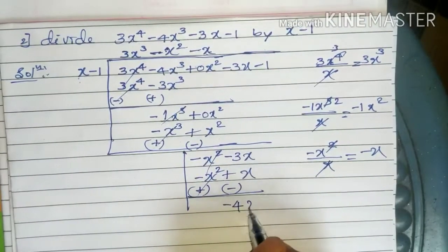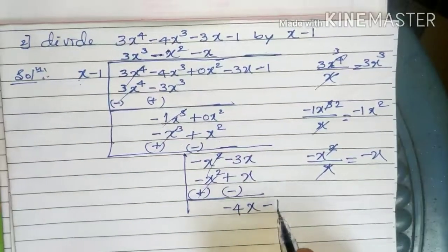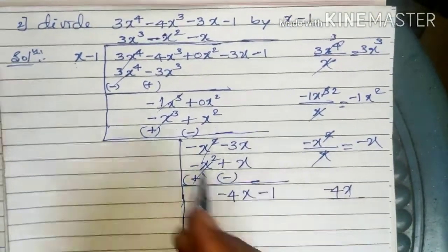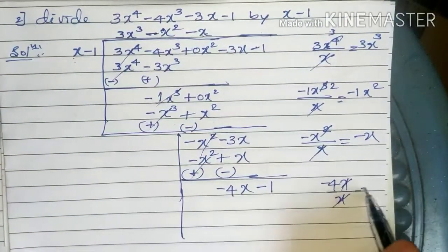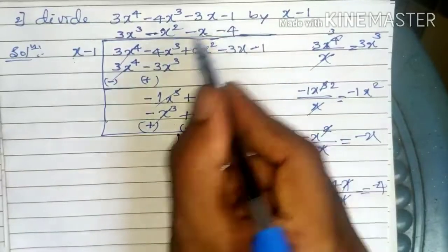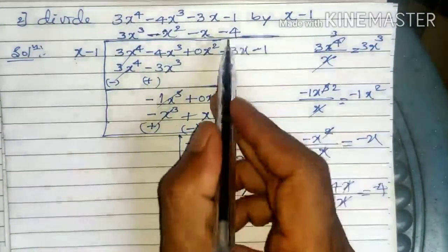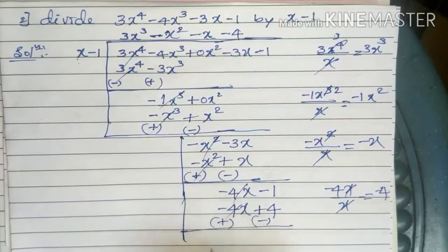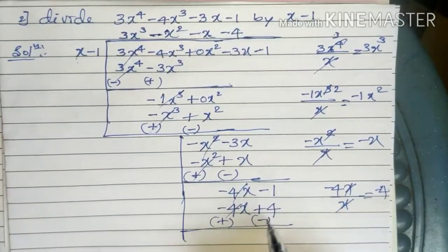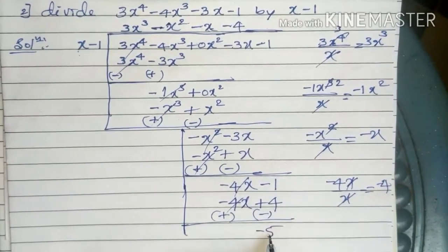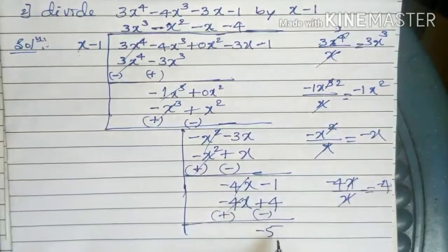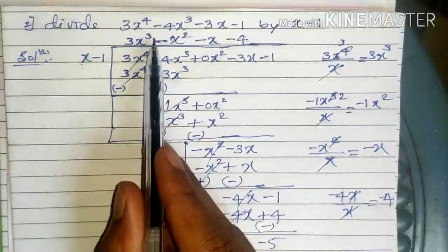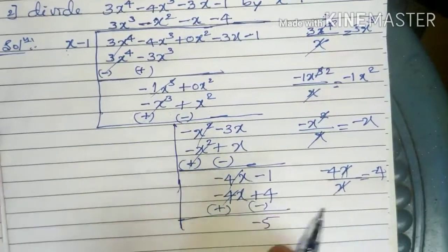Dividing -x² by x gives -x. Multiply -x by (x - 1): -x² and +x. Subtract: -3x - (+x) = -4x. Bring down -1. Then -4x divided by x gives -4. Multiply -4 by (x - 1): -4x and +4. Subtract: -1 - 4 = -5. The remainder is -5, degree 0, which is less than the divisor's degree 1, so division ends. The quotient is 3x³ - x² - x - 4 with remainder -5. This method is called the long division method.